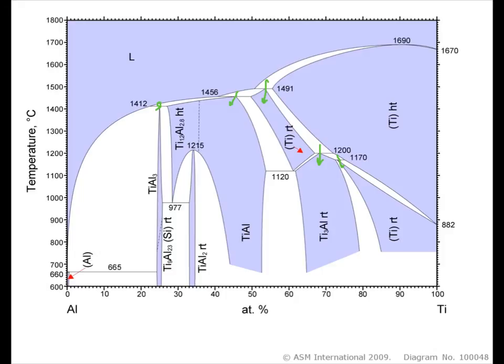We also can find a number of eutectic reactions on here. We have a eutectic here, and we have another eutectic over here. So, these are some examples of the peritectic reaction and where we can find it on a phase diagram. See you next time.